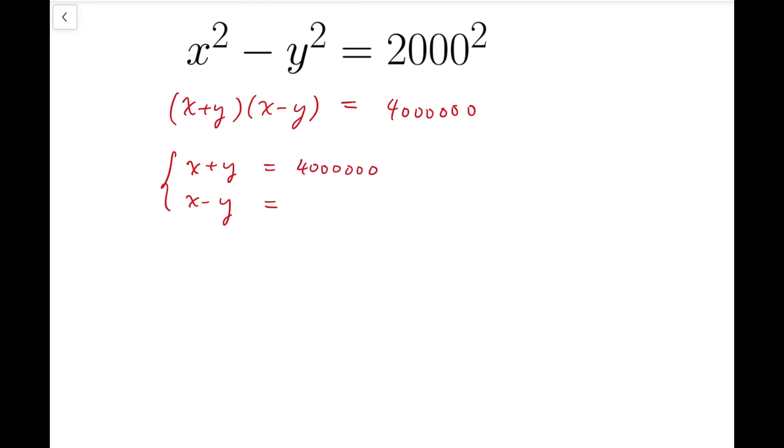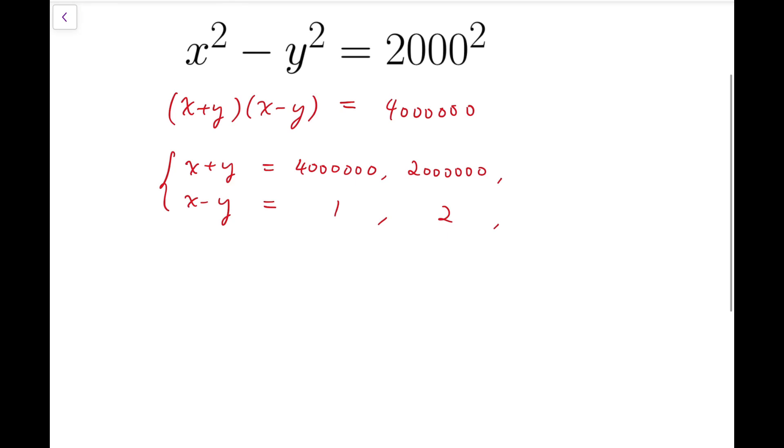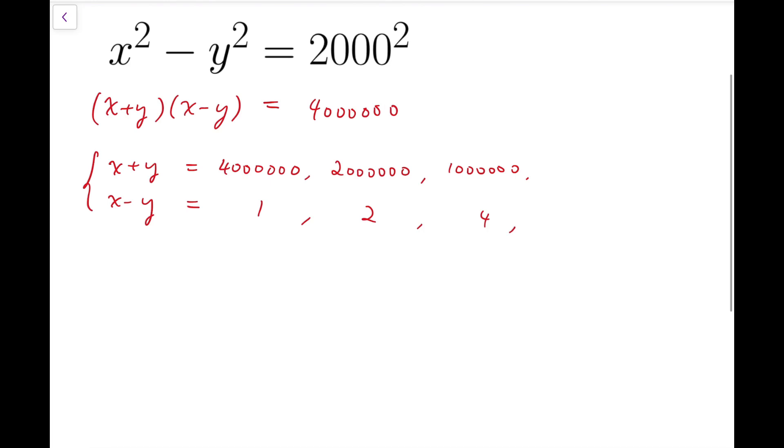Starting from the largest possible value for x plus y, which is 4 million, and then we can continue listing out the cases, and it should go on and on.